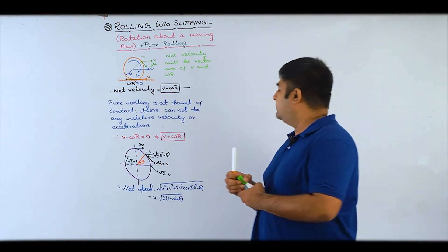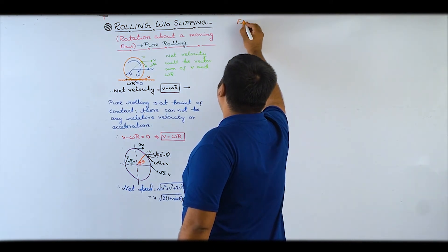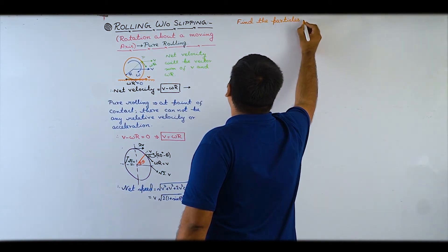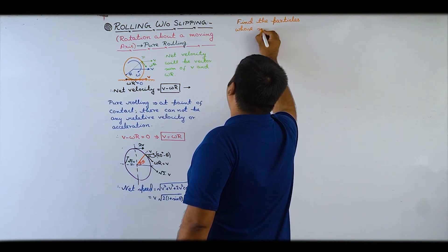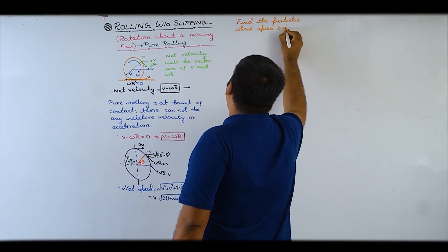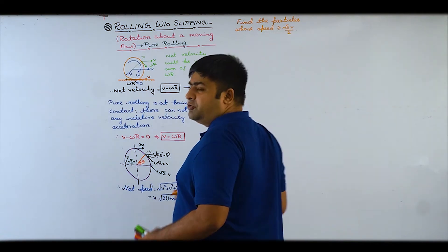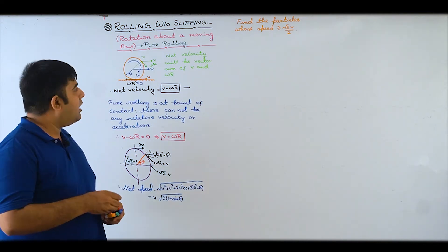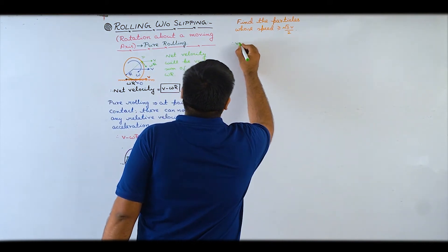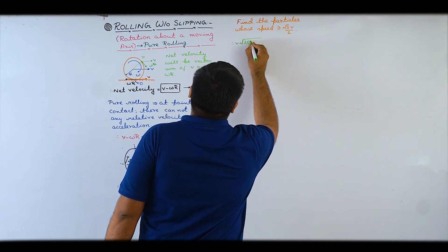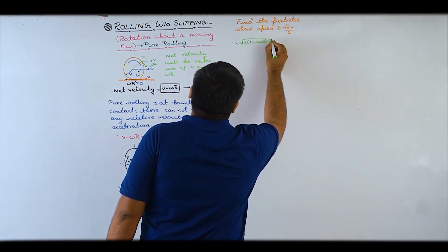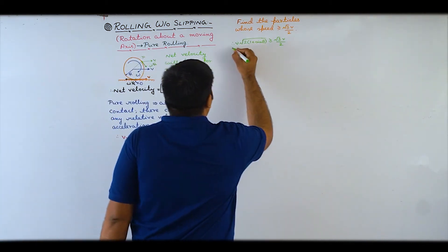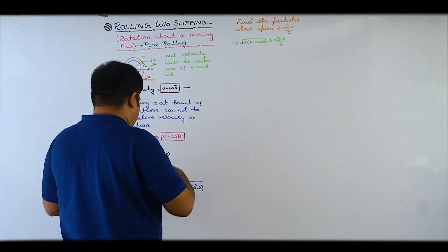In general, kisi bhi particle ka speed humne angle ke respect mein likh diya hai. Aise questions aa sakte hain: find the particles whose speed is greater than or equals to √3·v/2 - vo saare particles dhoondho jinki speed √3v/2 se zyada hai. To: v·√(2(1 + sinθ)) ≥ √3·v/2. V cancel karke squaring maarenge.